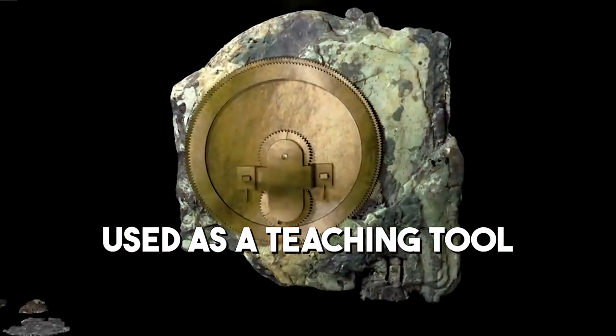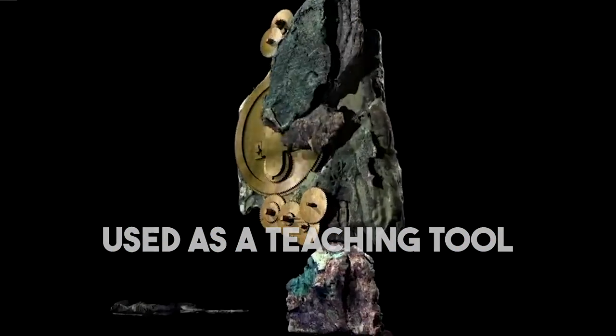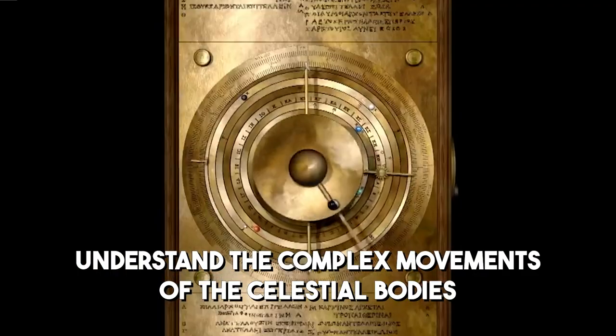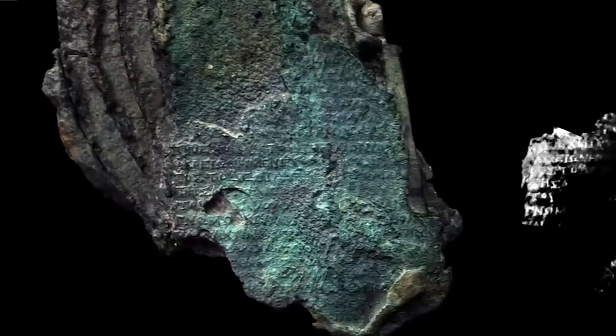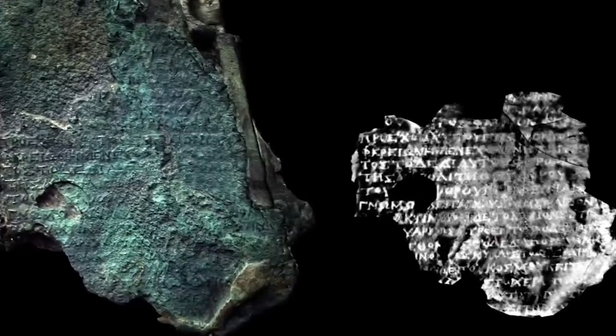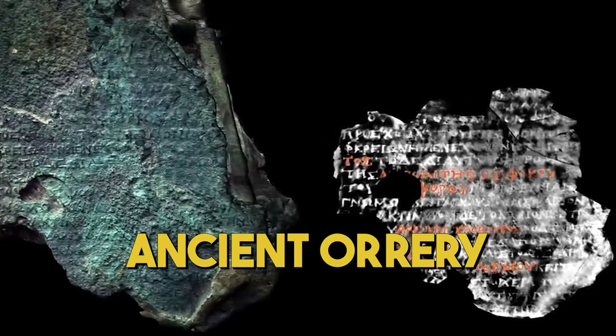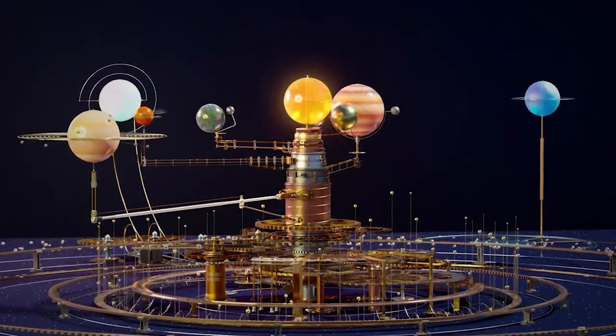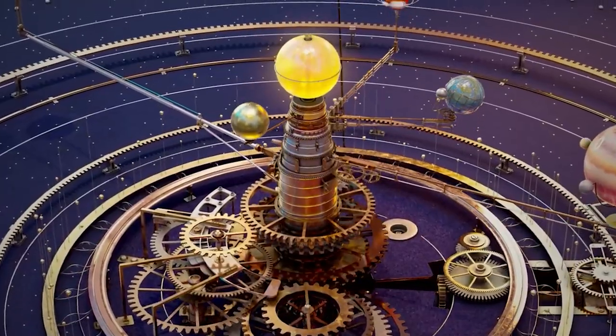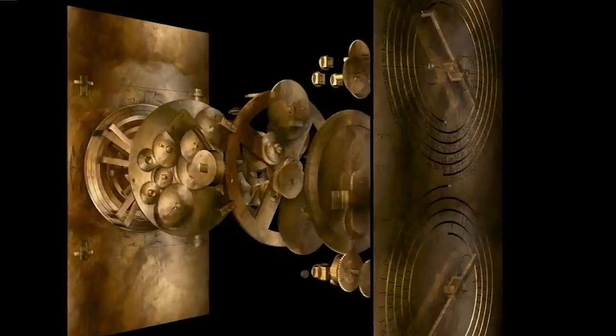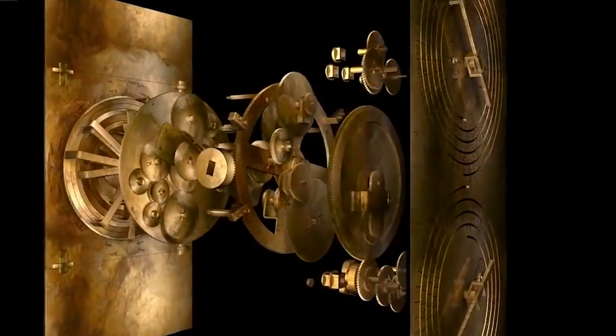Another theory posits that the mechanism was used as a teaching tool, helping students of astronomy and mathematics visualize and better understand the complex movements of celestial bodies. This theory is supported by the detailed inscriptions found on the device, which could serve as instructions for students. Some have even proposed that the mechanism was a type of ancient orrery, a mechanical model of the solar system used to demonstrate the relative positions and motions of the planets. While there is no consensus on the exact purpose of the Antikythera mechanism, the various theories highlight the many possibilities and the ingenuity of the ancient Greeks.